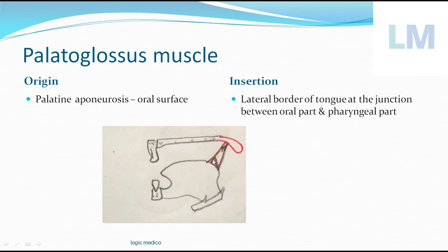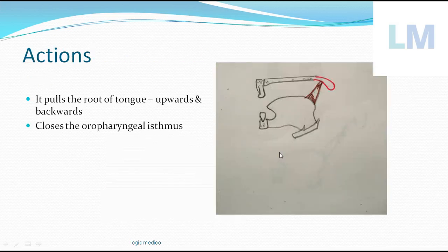For the insertion: the lateral border of the tongue — not near the tip or near the root, but at the exact junction between the anterior two-thirds of the tongue (the oral part) and the posterior one-third of the tongue (the pharyngeal part). That is the precise insertion of palatoglossus.